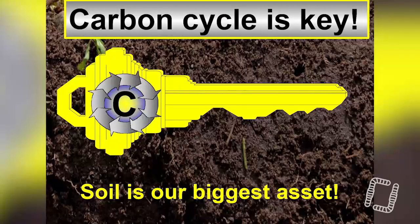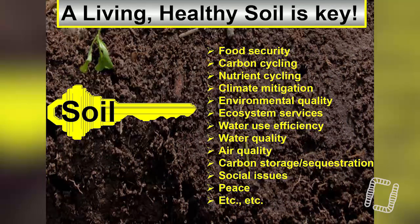If you only take one thing home from this session, it is that the carbon cycle is key. The healthy soil is key, and the way we maintain this soil health is through carbon management. We need food security, and that's dependent on carbon and nutrient cycling. We need to mitigate some aspects of climate, improve environmental quality, improve water use efficiency, and address many other social issues. Soil is the fundamental foundation of everything that provides us with three meals a day.